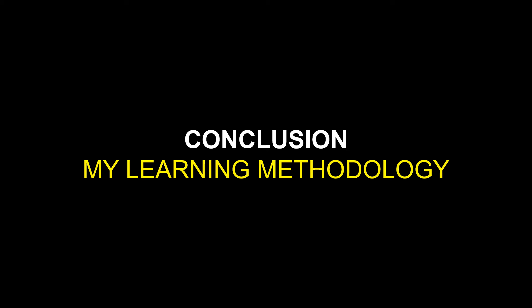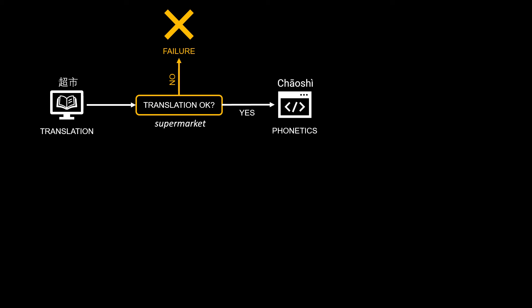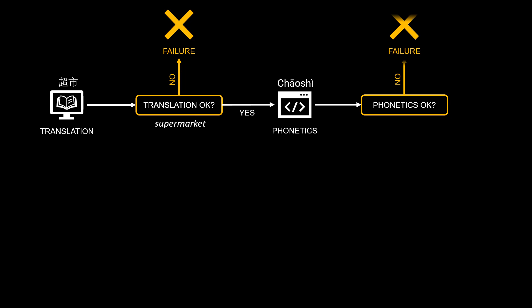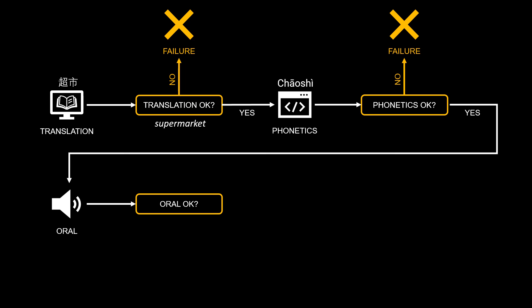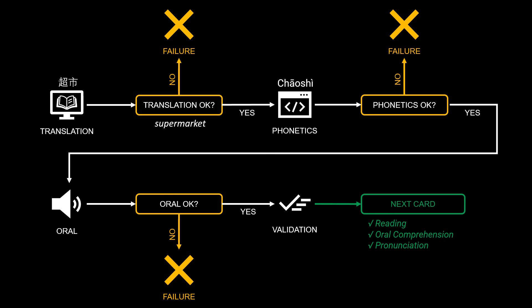You can find all the code in the article linked in the description. Let me share my learning methodology — it's a simple way of learning reading and pronunciation using the same exercise. Step one: Anki shows you the Chinese character and you ask yourself 'do I know the translation?' — for example 'I think it's supermarket.' If wrong, press again until correct. Then check the Pinyin — if wrong, press again. Then listen to the pronunciation: did you pronounce it the same way? If no, press again. At the end you've validated your oral comprehension, reading, and pronunciation.